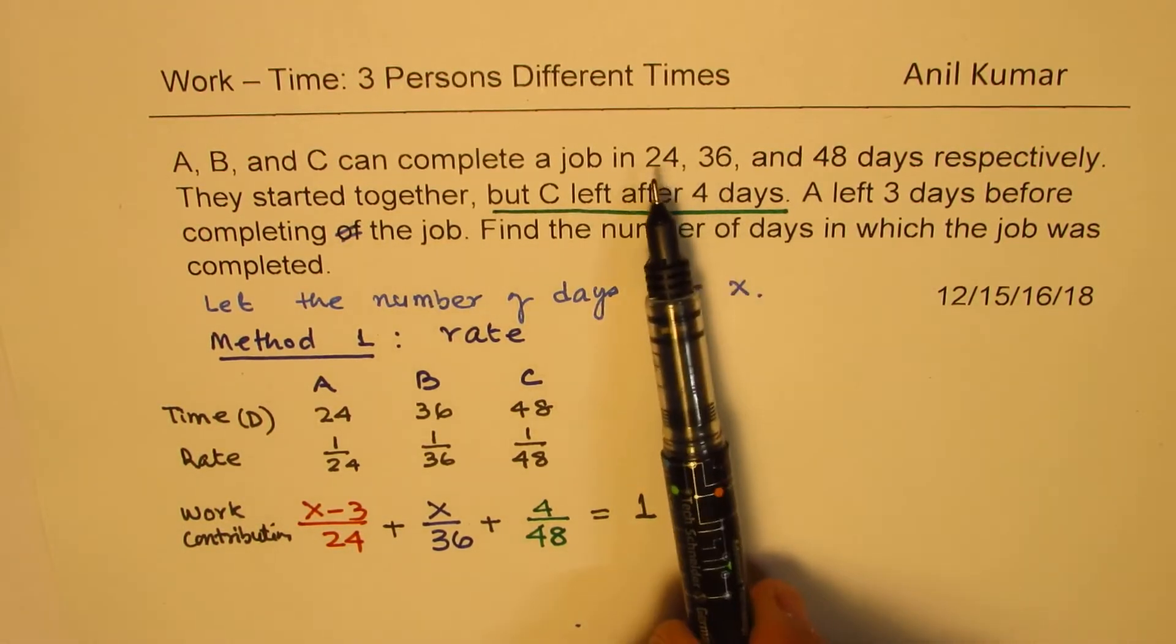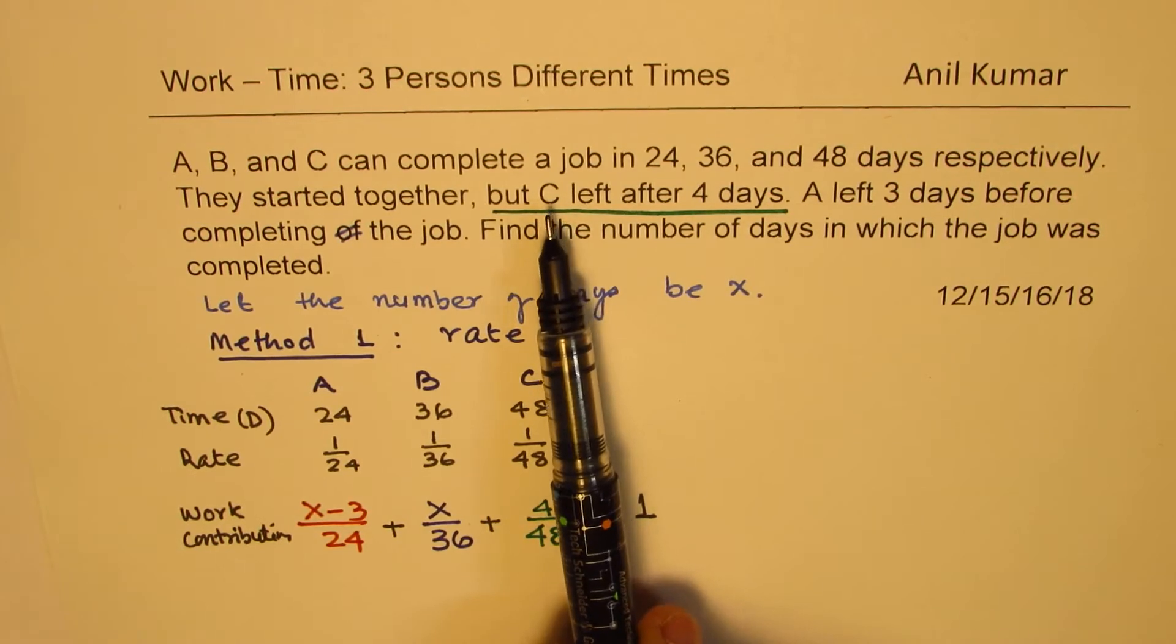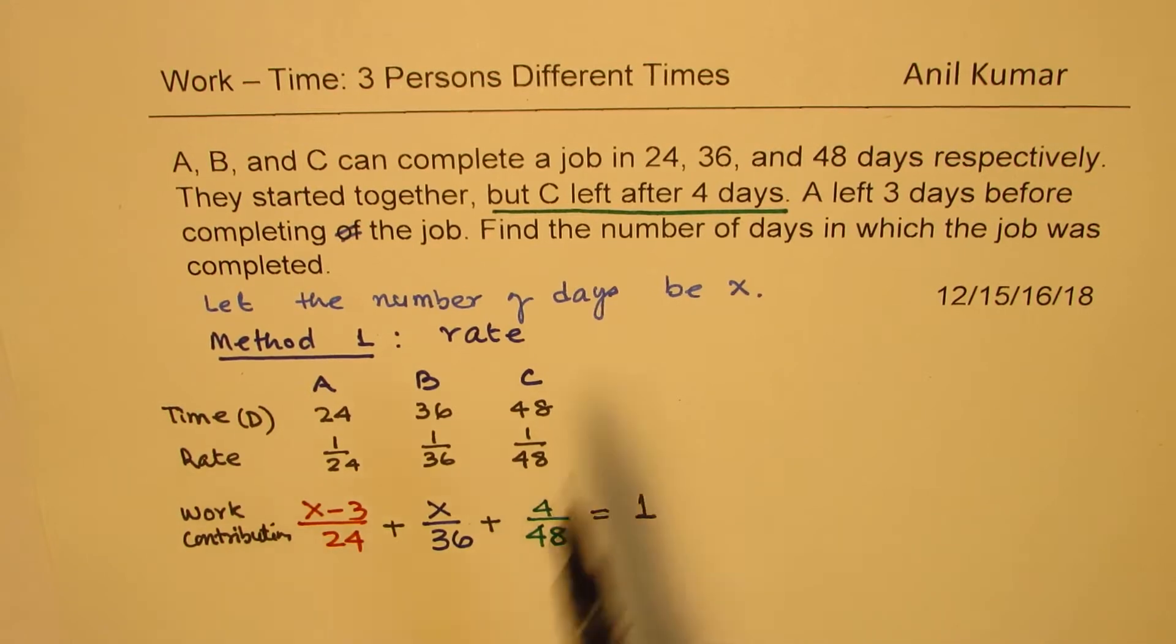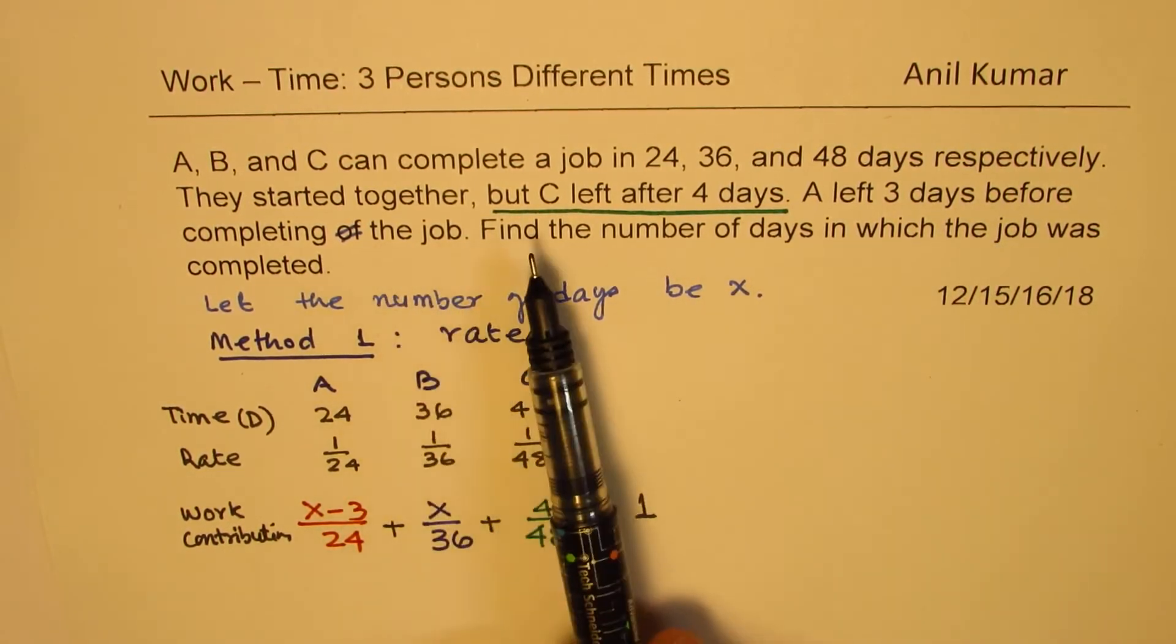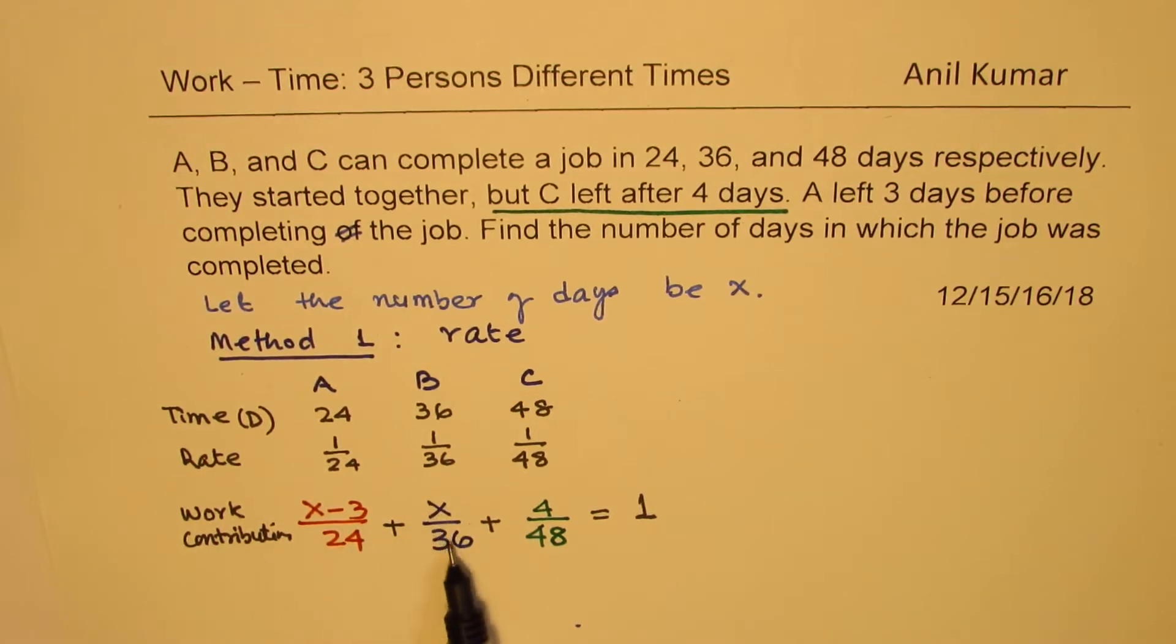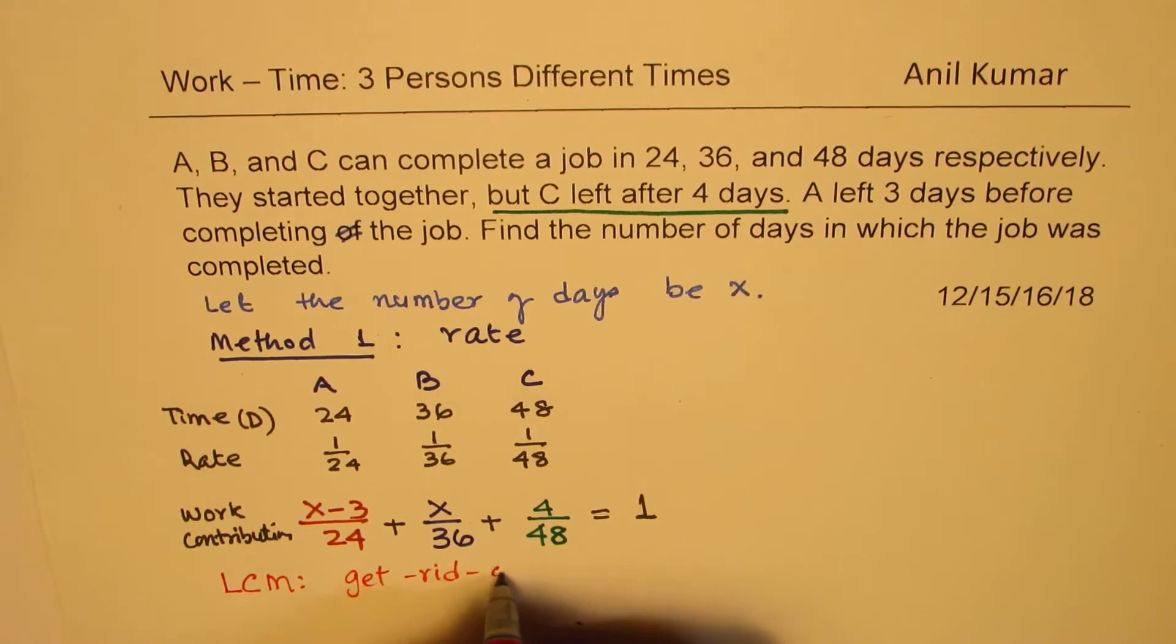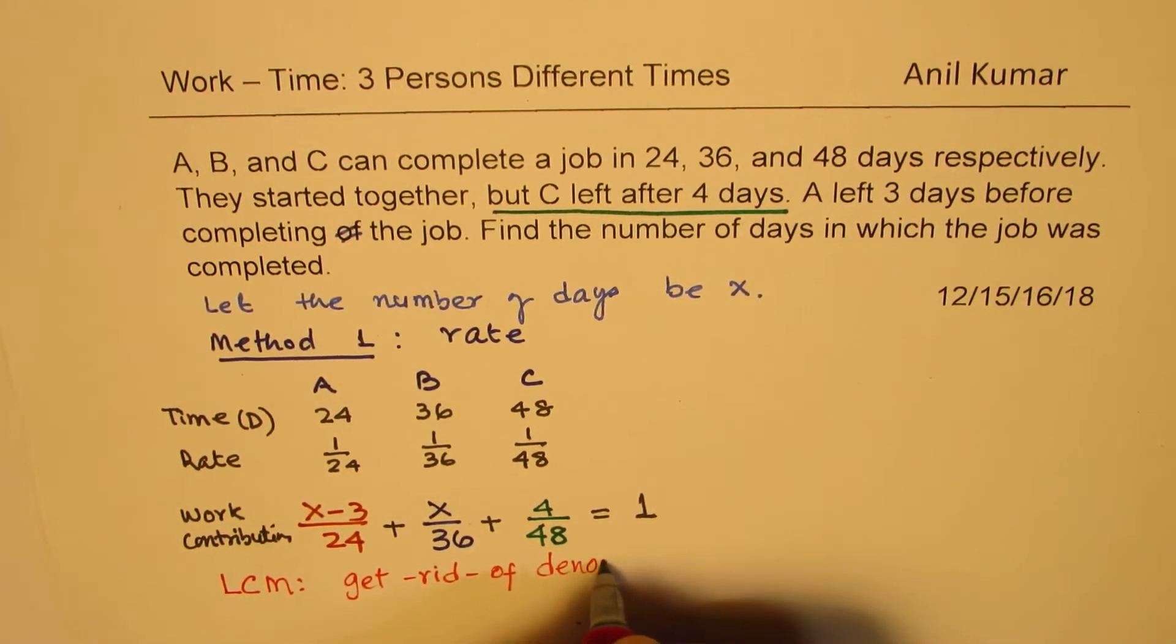We are given the days, as soon as we read C left after four days, means worked for four days, four out of 48. Three days before A left, X minus 3 over 24 plus X over 36 is 1. So within a few seconds, you should be in a position to get this equation. Now, second question now is how to solve these fractions? So to solve fractions, we have to find LCM. That helps to get rid of denominator.